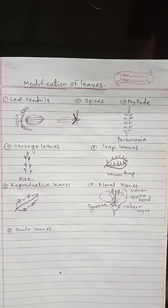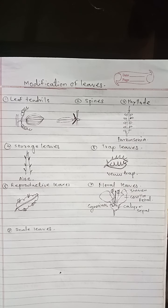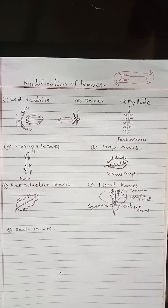In some other cases, leaf tips get modified into tendrils — example is Gloriosa. In some plants, the petiole is modified into tendrils — example is Clematis. In others, stipules get modified into tendrils — example is Smilax. In the insectivorous plant Nepenthes, the midrib of the leaf gets modified into tendrils.